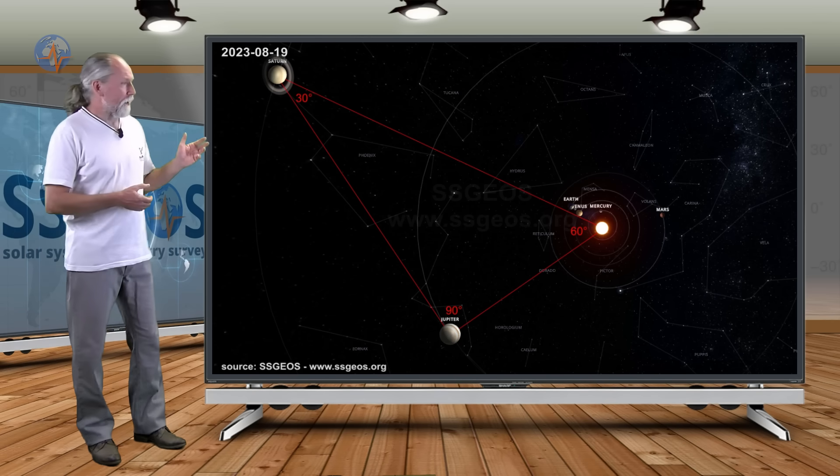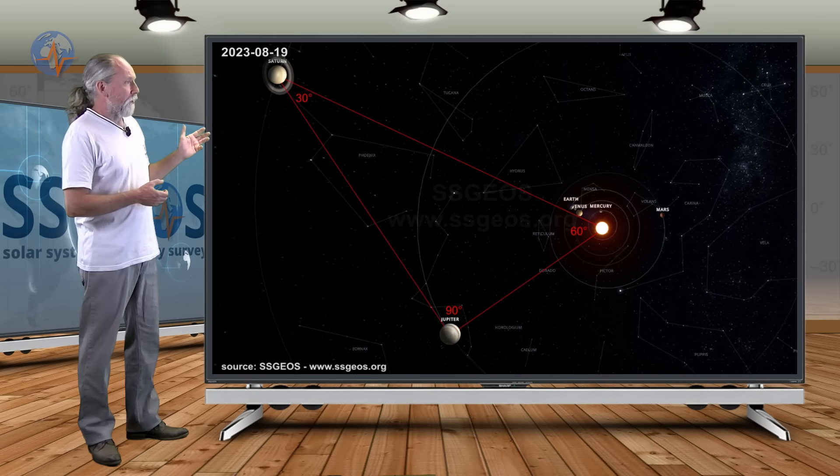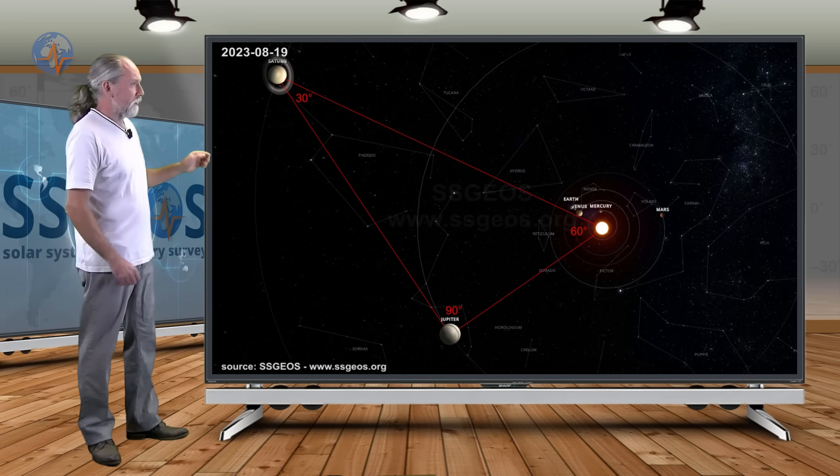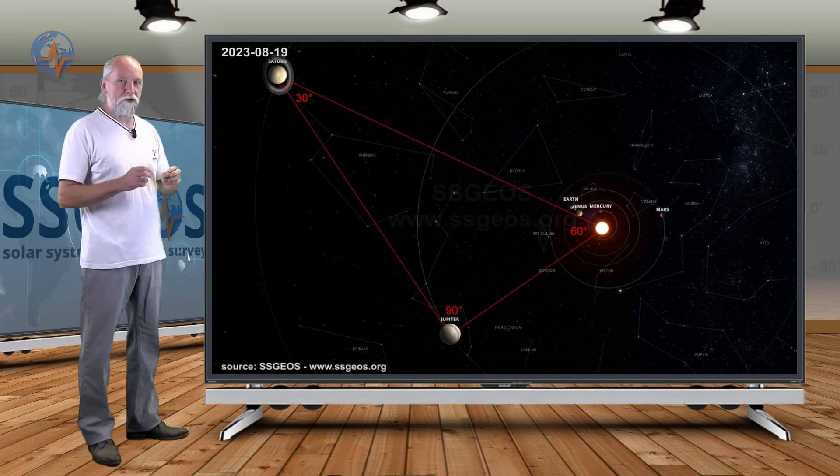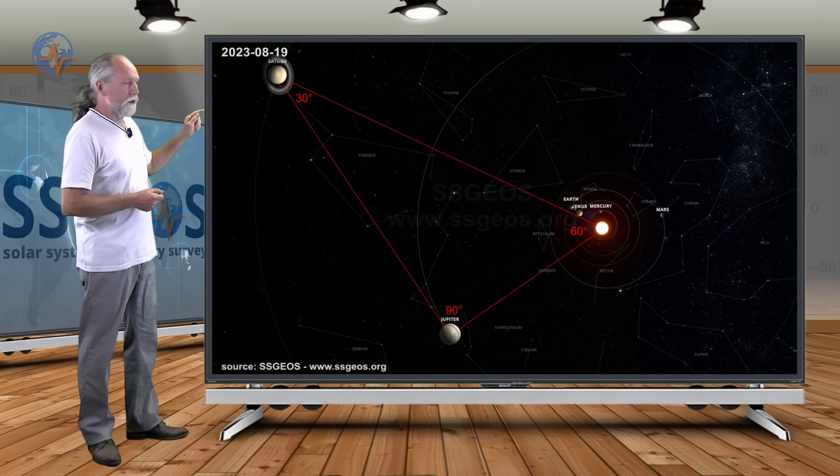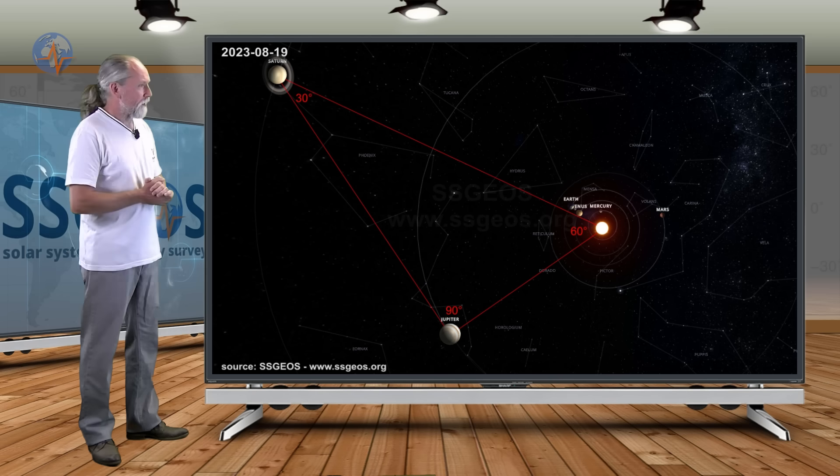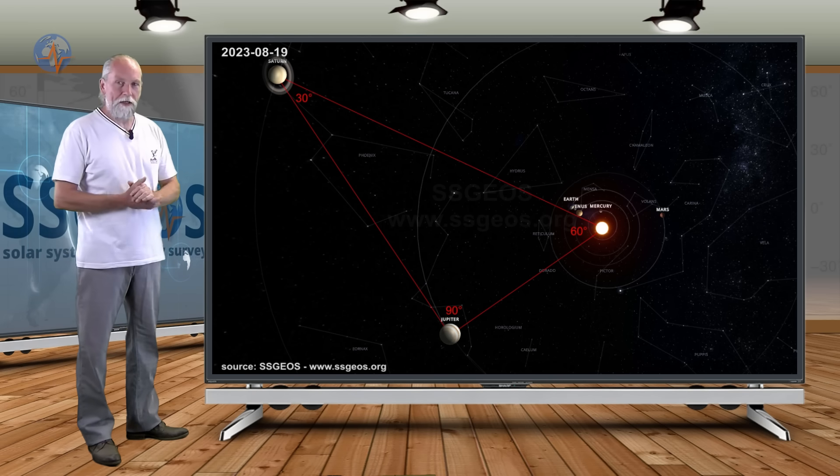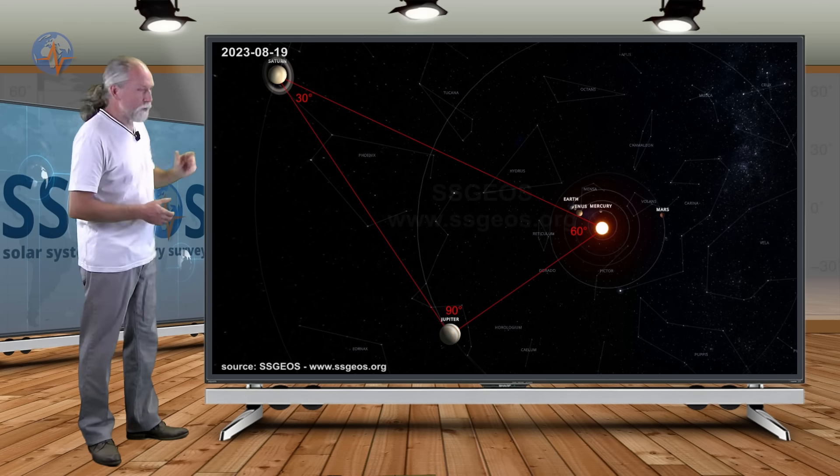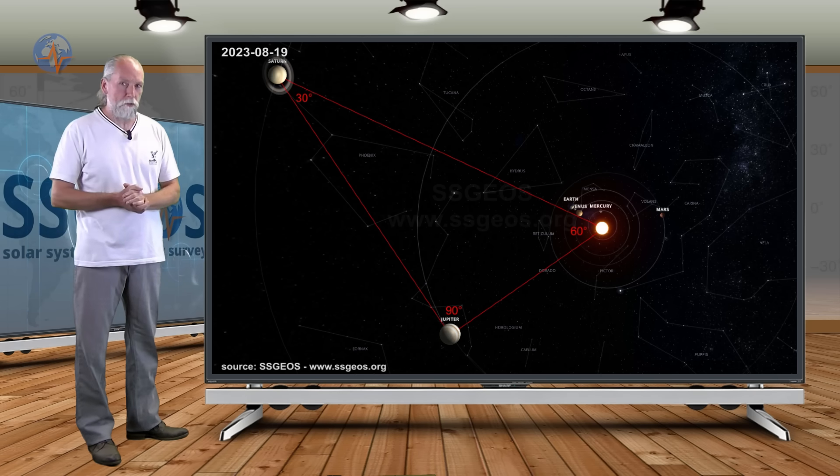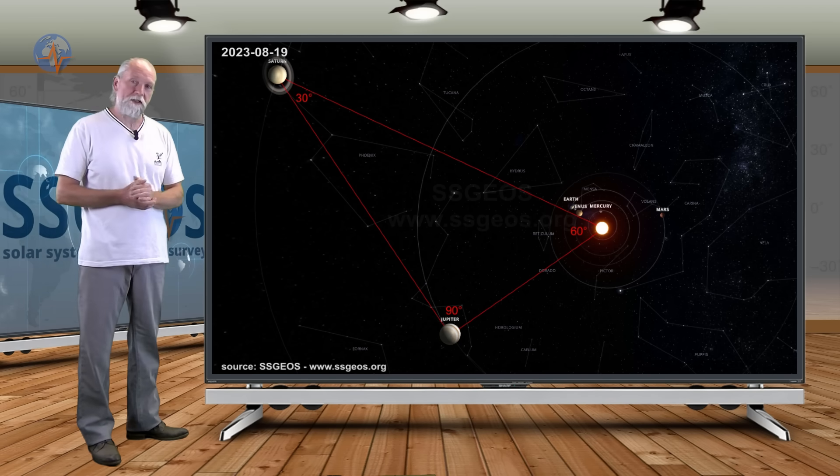If we look at some additional planetary geometry here, this is very interesting. Tomorrow, or actually on the 19th, 18, 19th, we have some very interesting planetary geometry with Jupiter, the Sun and Saturn. As they are making a 30, 60, 90 degree angle. And that is right in the middle of the critical planetary geometry that we have. This is very unique planetary geometry with the largest celestial bodies in the solar system.